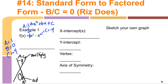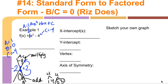We want two numbers that multiply to negative 4 and add to 0. Looking at factors of 4: 1 and 4, or 2 and 2. If we use 2 and 2 with opposite signs, negative 2 times positive 2 makes negative 4, and negative 2 plus positive 2 makes 0 — a zero pair. So the factored form is f(x) = (x - 2)(x + 2).